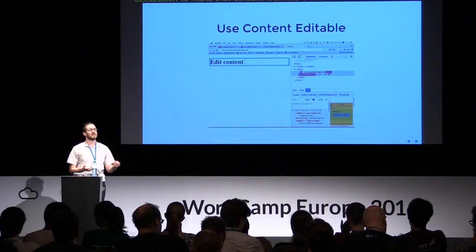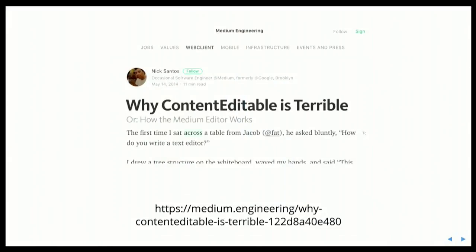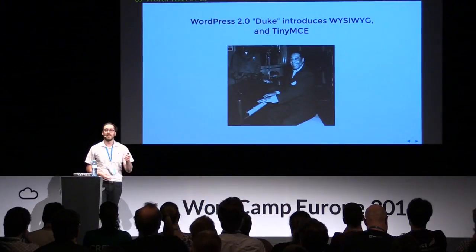This is problematic because as a developer we want structured, predictable data in our document. Nick Santos, who works on the Medium.com editor, has a great article called 'Why ContentEditable is Terrible,' which is a magnificent and aptly titled article that dives deep into these issues and how they influenced the Medium WYSIWYG editor. And the irony is that Medium itself uses ContentEditable. So ContentEditable leads us to libraries that handle these browser inconsistencies, like TinyMCE and CKEditor. You may be familiar with TinyMCE because it was introduced to WordPress over ten years ago in version 2.0 Duke, named after Duke Ellington, the legendary jazz pianist.